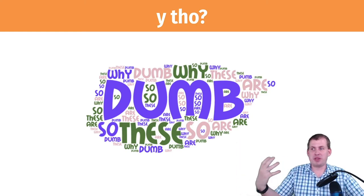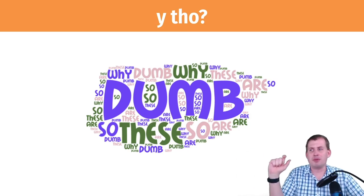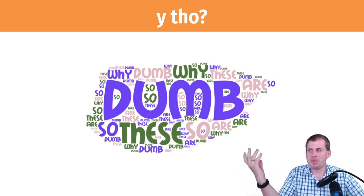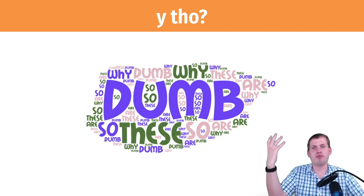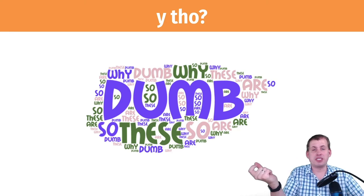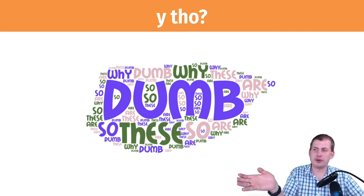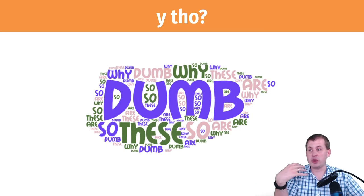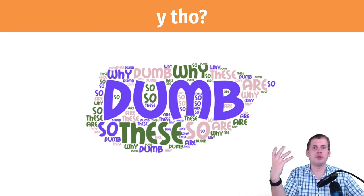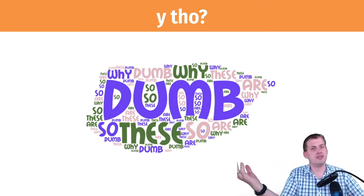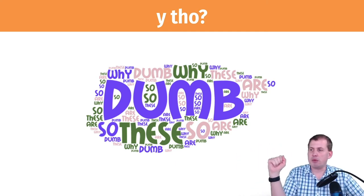About ten years ago word clouds were all the rage — even in academic articles. People loved them; you could make them on Facebook and share them, or put them in an actual journal article. But they don't really show trends. What they do is size the most common words by frequency — the more repeated a word, the bigger it is. That's the only dimension being shown. There's nothing on the x-axis, nothing on the y-axis, and the colors are random. It's essentially the pie chart of the text analysis world.